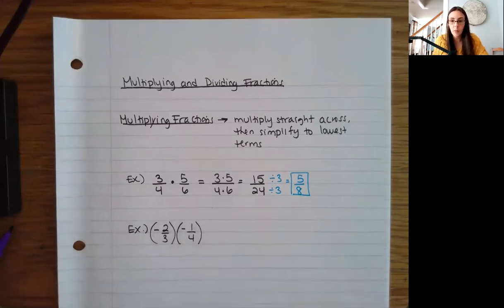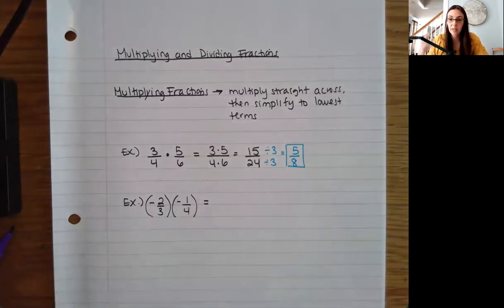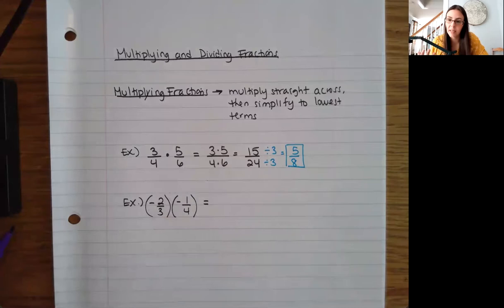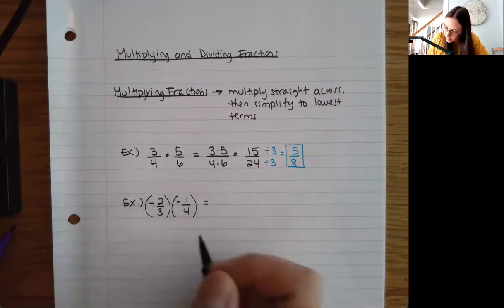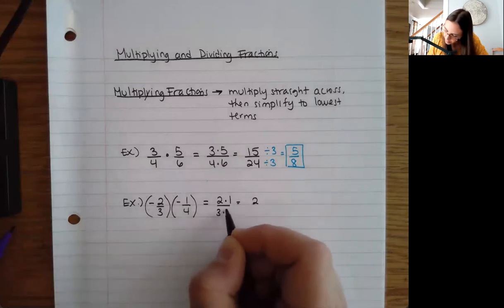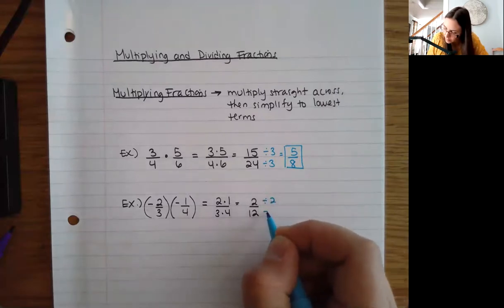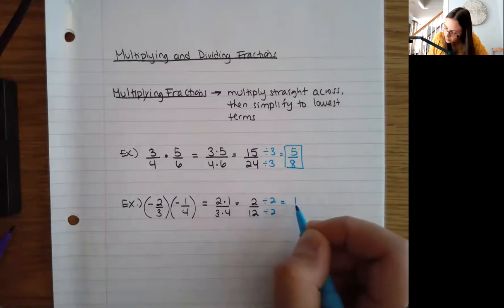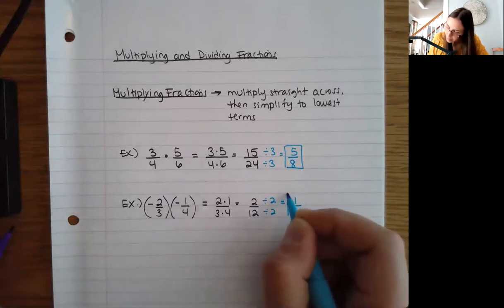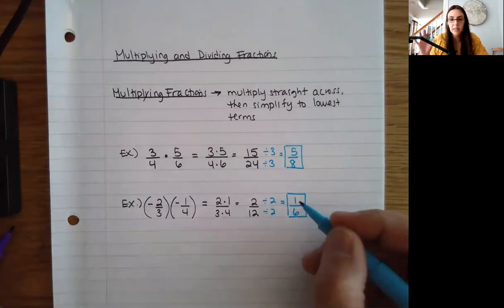Negative 2/3 times negative 1/4. We know our rules for negatives when we multiply — a negative times a negative is a positive. That's still true here, even with fractions. So that cancels out, and then I multiply straight across: 2 times 1 is 2, and 3 times 4 is 12. I simplify: 2 divided by 2 is 1, 12 divided by 2 is 6. If a 1 is in the numerator, you can't cancel it out — the answer is 1/6, not 6.